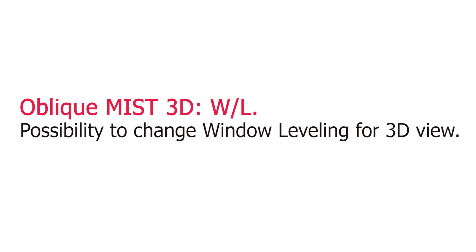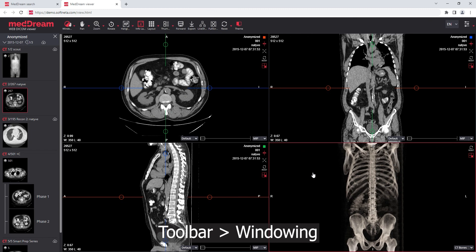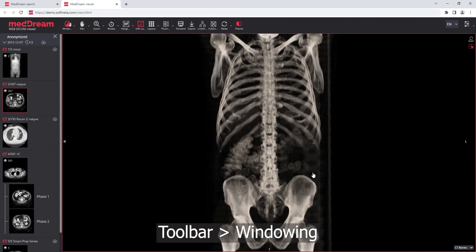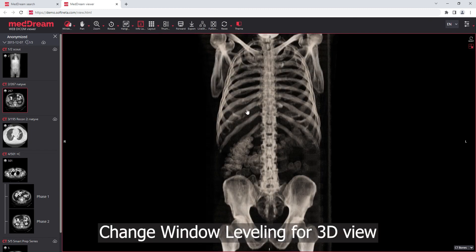Oblique 3D: possibility to change window leveling for the 3D view. Choose windowing in the toolbar and change the window leveling for the 3D view.